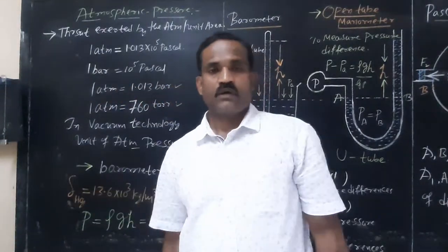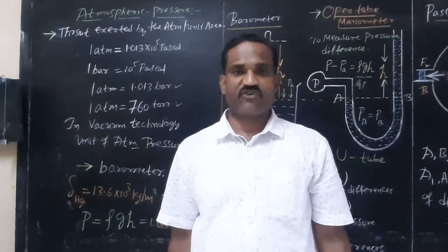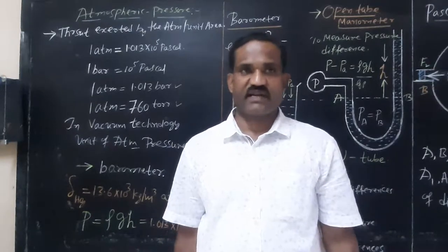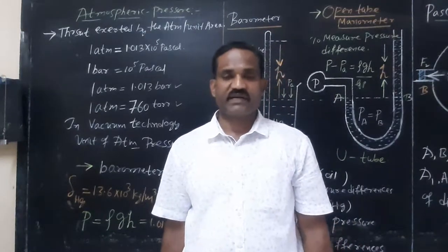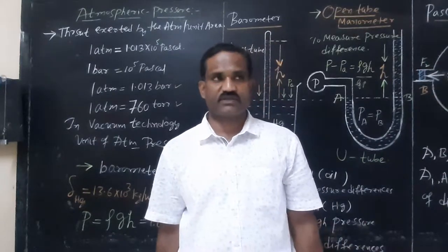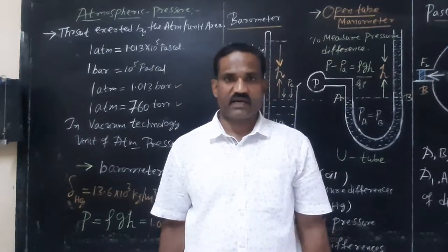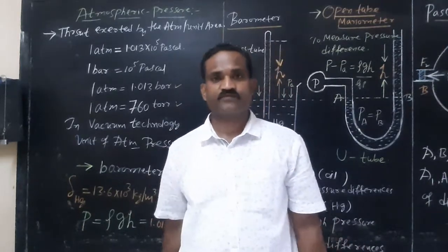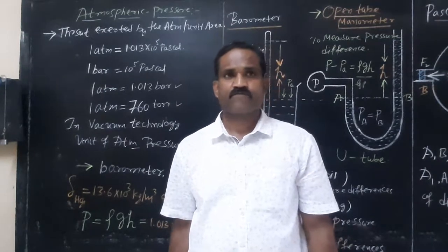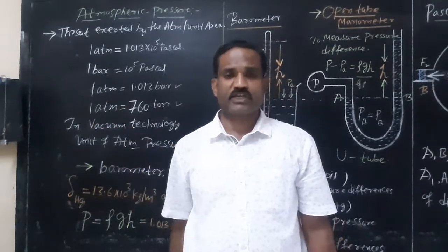Hello students. We had a discussion on pressure, fluid pressure, and fluid thrust. What is the pressure at a point inside a liquid? P is equal to rho times g times h — that is the pressure exerted by a liquid at a given point inside a liquid, called pressure at a point inside a liquid.